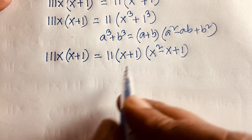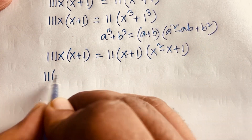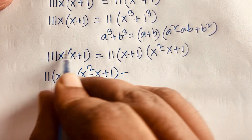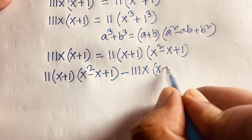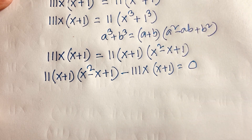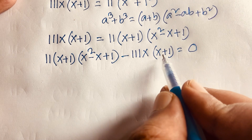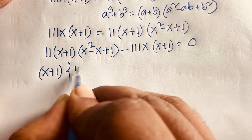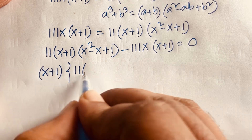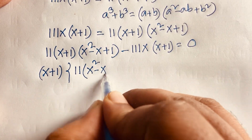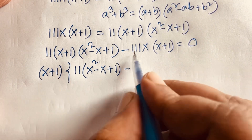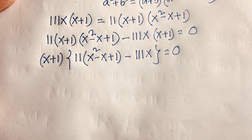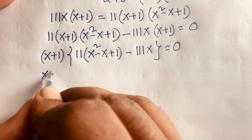So the equation becomes 111x(x + 1) equals 11(x + 1)(x squared minus x + 1). Moving everything to one side gives 111x(x + 1) minus 11(x + 1)(x squared minus x + 1) equals 0. We can see that (x + 1) is a common factor.